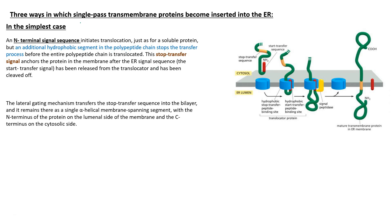In this lecture, we will discuss the mechanism of integration of single-pass transmembrane proteins in the ER membrane. The N-terminus ER signal sequence plays a key role. It initiates translocation of the polypeptide chain across the translocator. This ER signal sequence has two binding sites: one binds SRP in the cytosol, and the other binds the hydrophobic signal-peptide transfer binding site in the translocator.